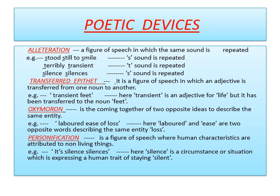Let's now have a look at the various poetic devices used in this poem. Alliteration has been used in this poem. Alliteration is a figure of speech in which the same sound is repeated. Examples of alliteration in the poem are: 'stood still to smile' — here the 's' sound is repeated; 'terribly transient' — the 't' sound is repeated; and 'silence silences' — the 's' sound is repeated.